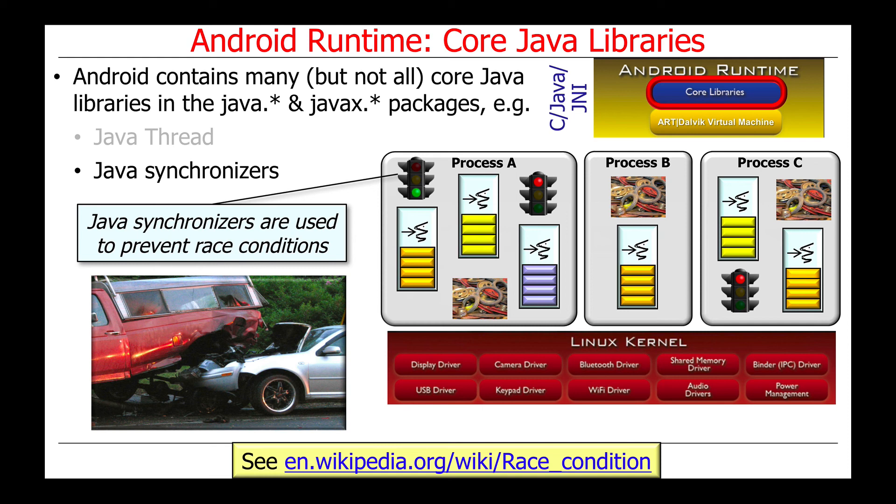There are lots of different ways to prevent these race conditions. One way is to use the synchronizers. Another way is to program using the various higher-level Java 8 concurrency and parallelism features, such as parallel streams, completable futures, or even the fork-join framework from Java 7, which can be used to partition data in such a way that there is often little or no shared state.